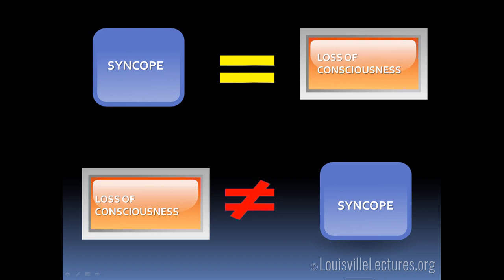The first episode occurred while she was sitting down. She noticed some spinning sensation, some vertigo. She used the word dizziness — just as a reminder, dizziness is a lay term, so always try to clarify what the patient means. She had this dizziness that was clarified as a sensation of spinning, and she got up and passed out. She did have a housemate present who said she lost consciousness for about a minute.